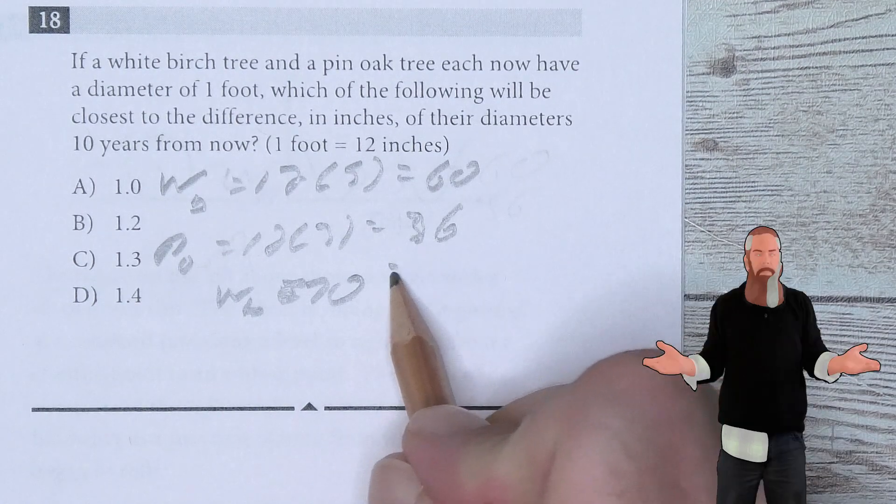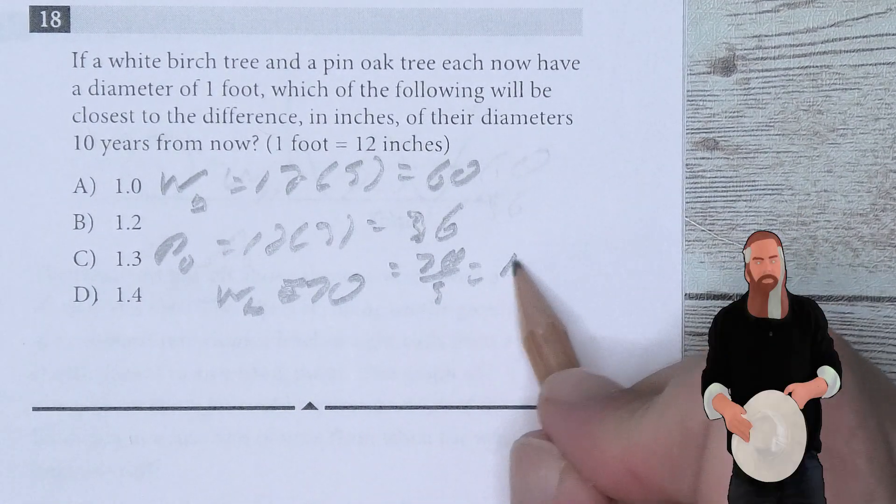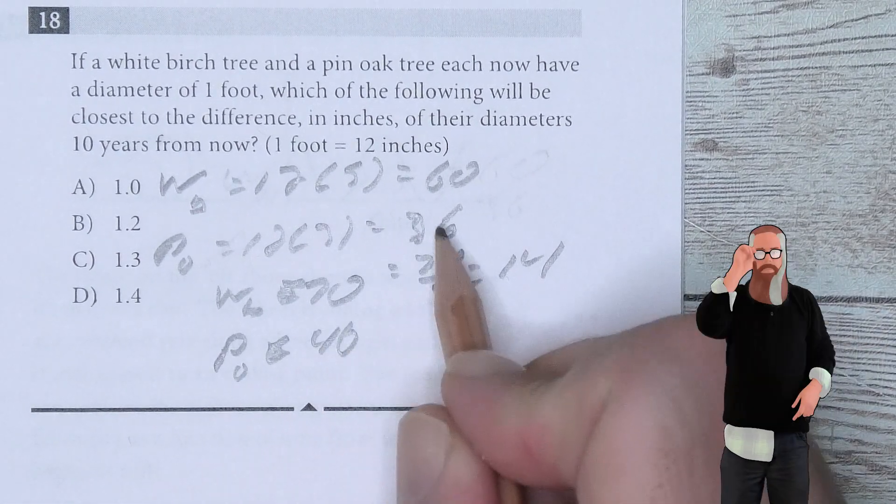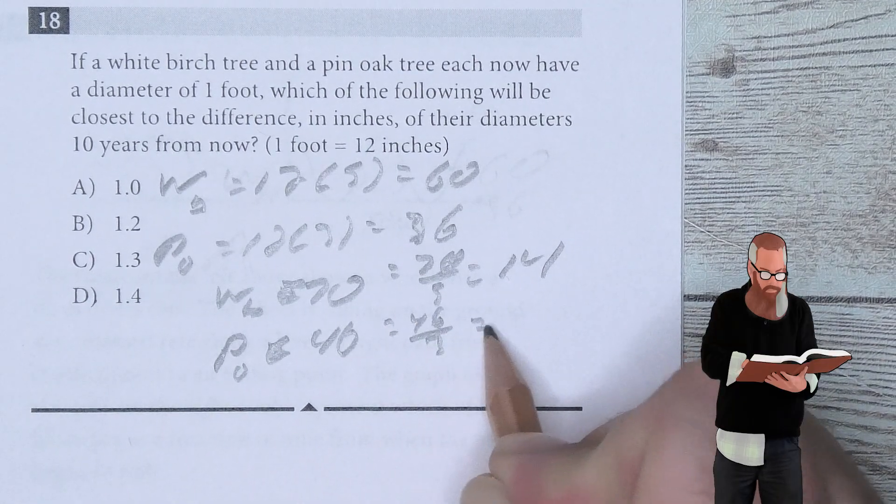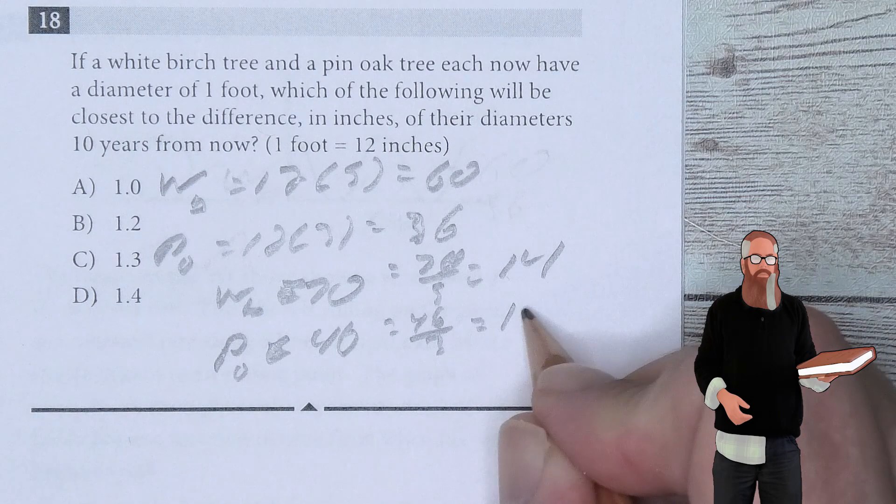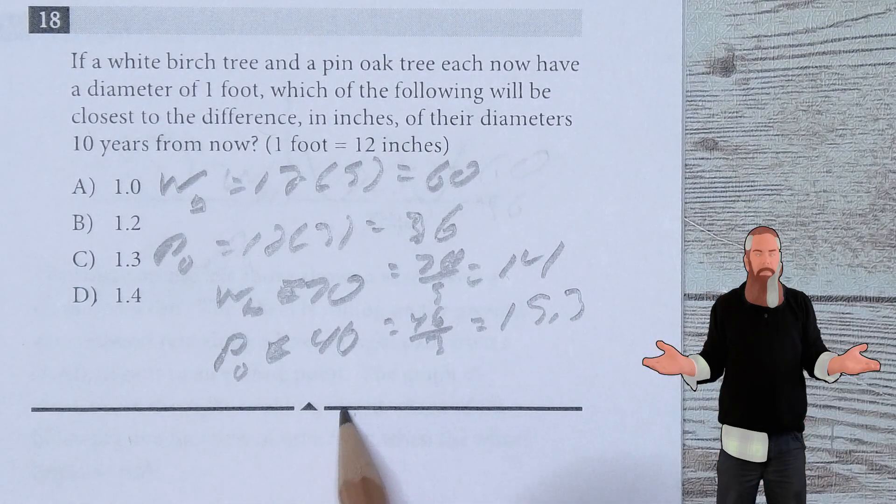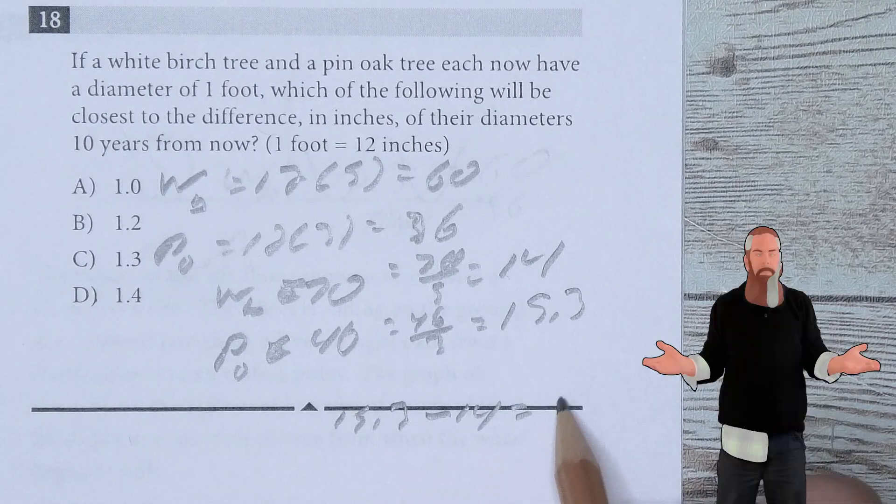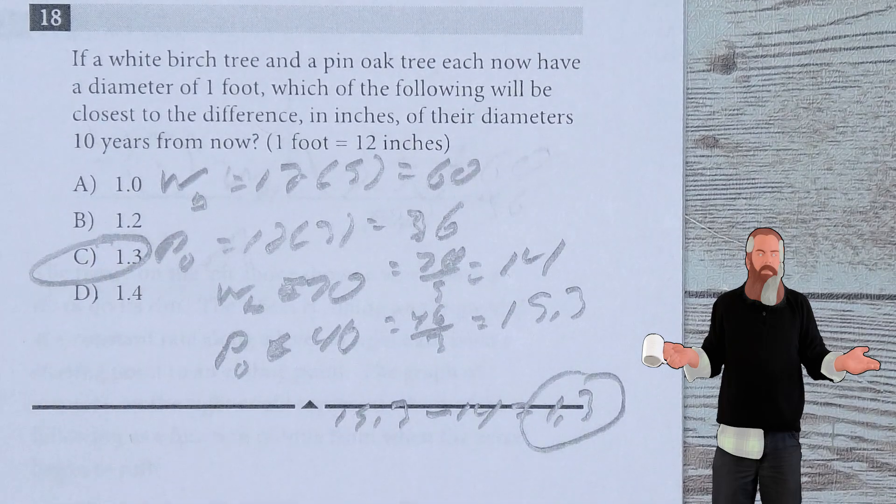Looking at the white birch at 70, we're looking at 70 divided by 5 means it would be 14. The pin oak at now 46, 10 more than that 36 would be 46 over 3, which is 15.3. So 15.3 minus 14 gives us 1.3 is the difference in size. So C is the answer.